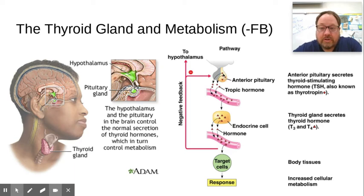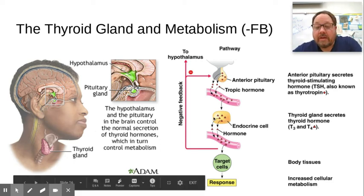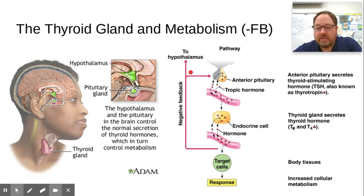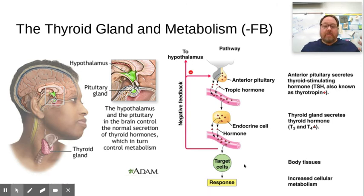The pituitary gland then releases thyroid stimulating hormone (TSH), which travels through the bloodstream to the thyroid gland in the neck. The thyroid gland then releases another pair of hormones — T3 and T4, also called thyroxin — which dock on target cells all around the body.